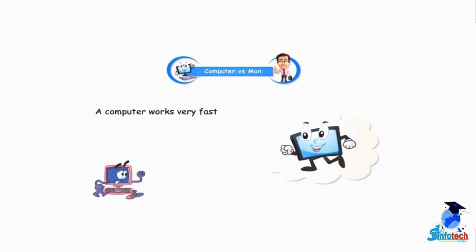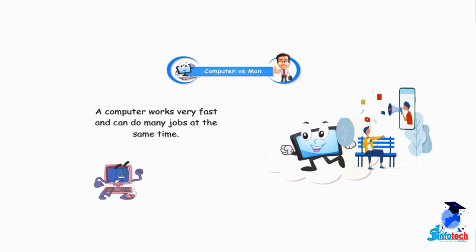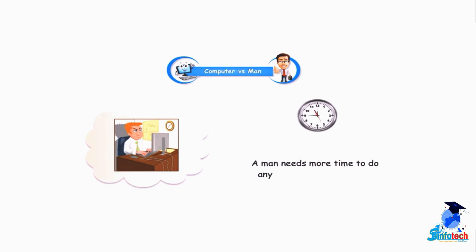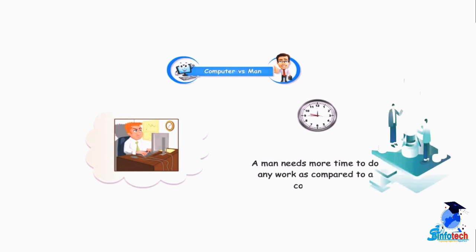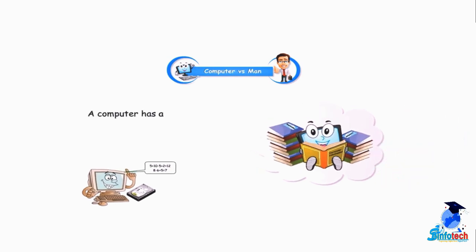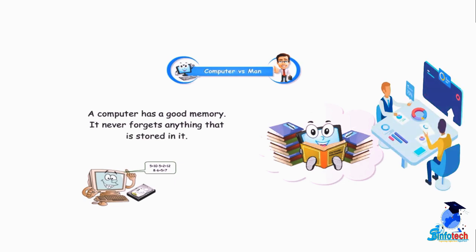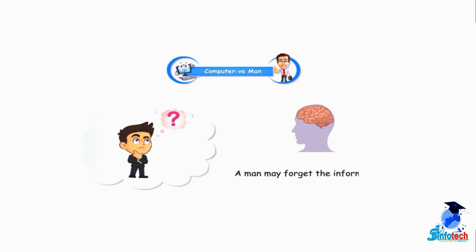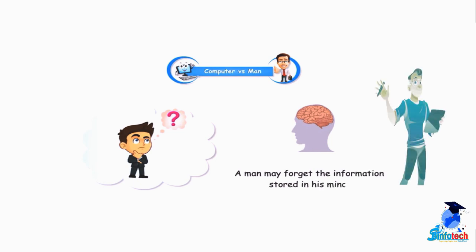A computer works very fast and can do many jobs at the same time. A man needs more time to do any work as compared to a computer. A computer has a good memory. It never forgets anything that is stored in it. A man may forget the information stored in his mind.